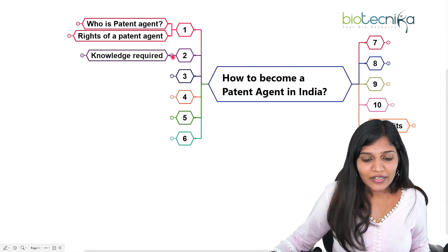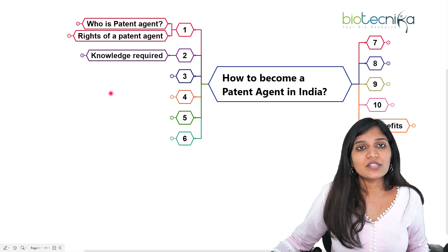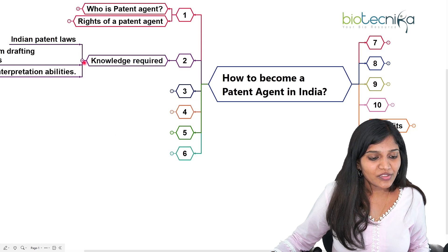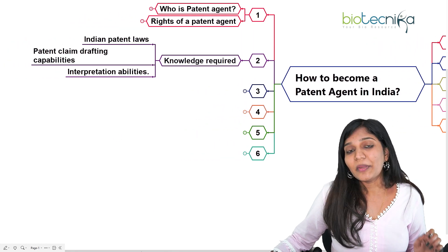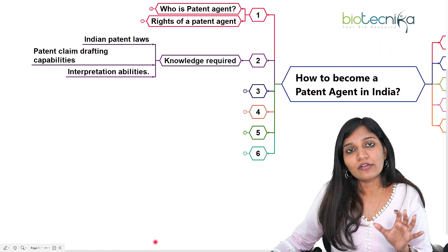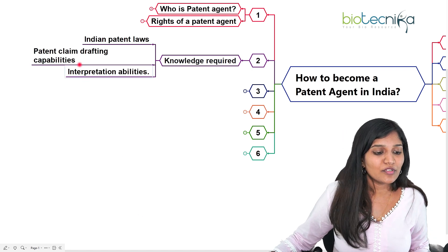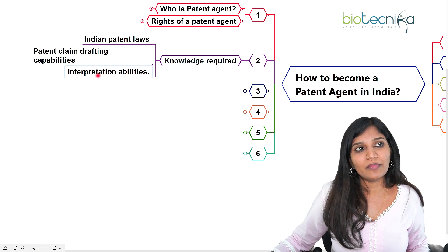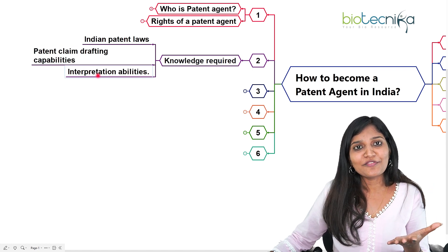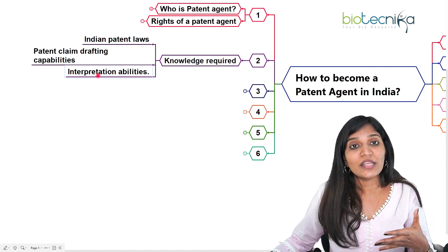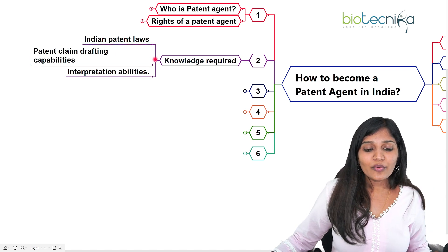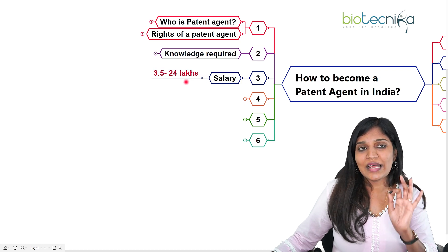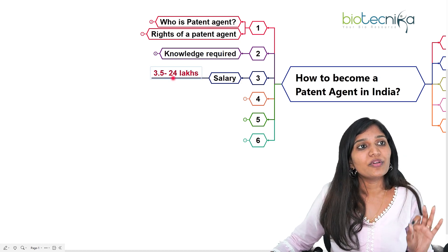These are the roles, responsibilities, and rights of the patent agent — making it a most privileged job. The knowledge required to become a patent agent includes Indian patent laws, patent claims drafting capabilities, and interpretation ability, because they will give you a scientific innovation and you need to interpret it accurately before filing the patent.